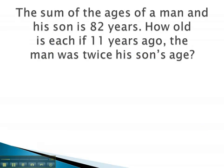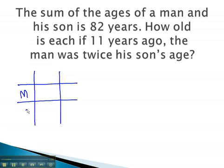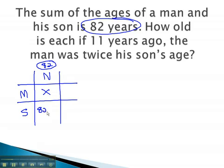In this first problem, we see that we are comparing the ages of a man and his son. Right now, we're told the sum of their ages is 82 years. We don't know how old the man is, so we make that x. The son becomes the subtraction problem, 82 minus x.